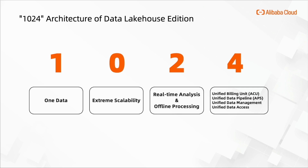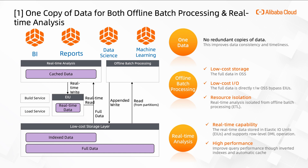Now I will introduce the details of some major selling points. First of all, one copy of data. One copy of data is stored in the OSS that provides local and high throughput capabilities to meet batch processing requirements. For offline batch processing jobs, full data interacts with OSS in append-write or rough-read mode, which provides local storage. The full data is stored in OSS with local IOs — the full data is directly read and written with OSS, bypassing EIUs — and resources isolation ensures real-time data analysis is isolated from offline batch processing.